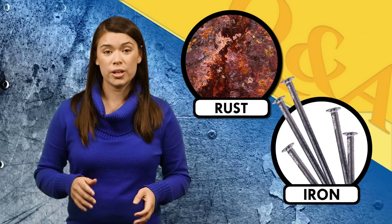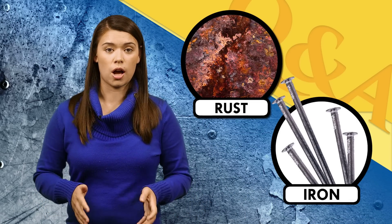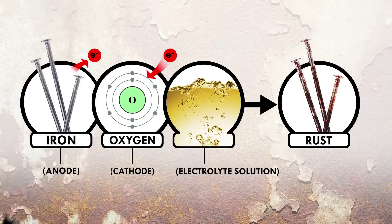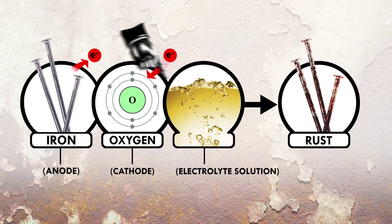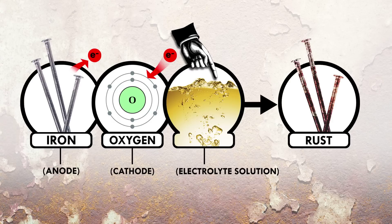A common example of corrosion is rusting, which happens to iron. You need just three ingredients for rust: an anode that easily gives up electrons — that's iron; a cathode that easily accepts electrons — that's oxygen; and lastly, an electrolyte solution that shuttles ions between the cathode and the anode.